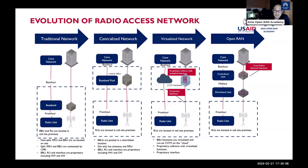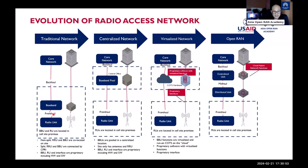This openness potentially drives down cost and accelerates innovation, enabling more agile and responsive networks. For example, if you find better specifications from another vendor, you can easily incorporate them — unlike traditional, centralized, or virtualized approaches where you must stick to one vendor. Open RAN can be implemented across 2G, 3G, LTE, and 5G, depending on the deployment approach.